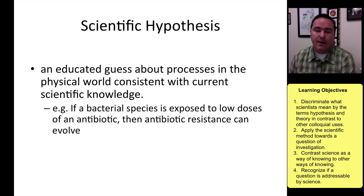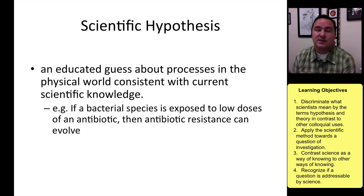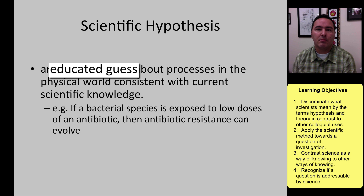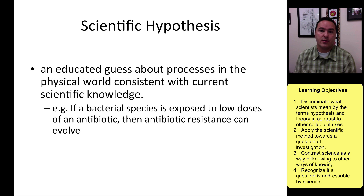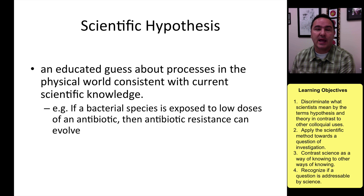There are some words that are used in science that are sometimes misunderstood, and the first one is scientific hypothesis. Many times people think a hypothesis is simply just a guess, but it's actually more than that. It's an educated guess about processes in the physical world that are consistent with current understandings. For example, if a bacterial species is exposed to low doses of an antibiotic, then antibiotic resistance can evolve — that's an example of a hypothesis.